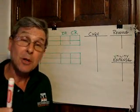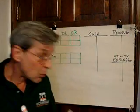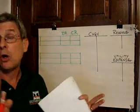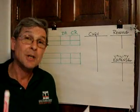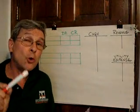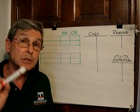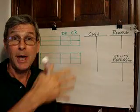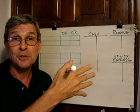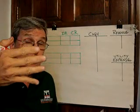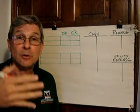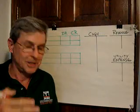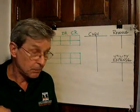Keep in mind that around the world in all accounting systems, accounts are always ordered in a standardized order. They always come assets first, liabilities second, then equity, then revenues, then expenses.